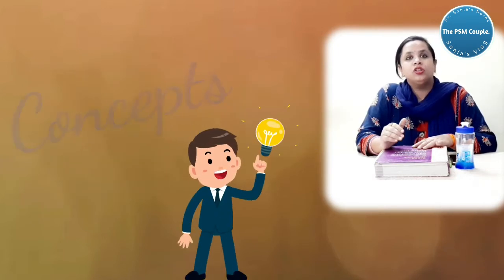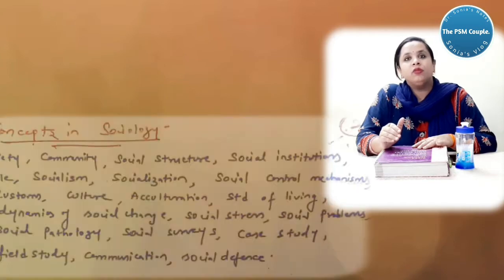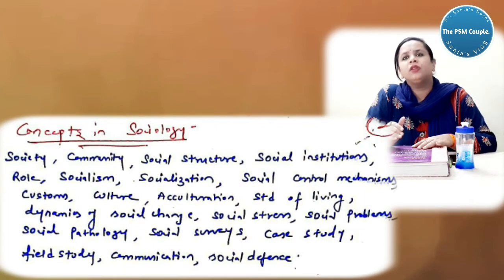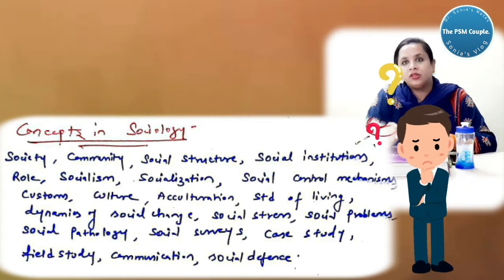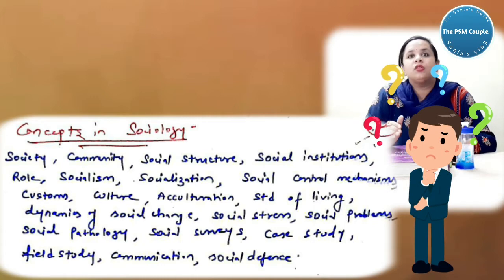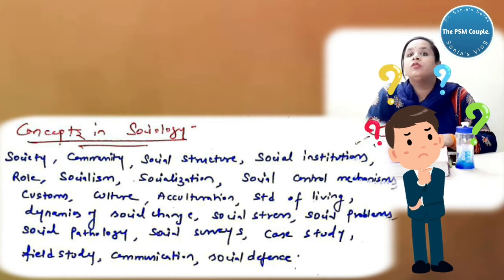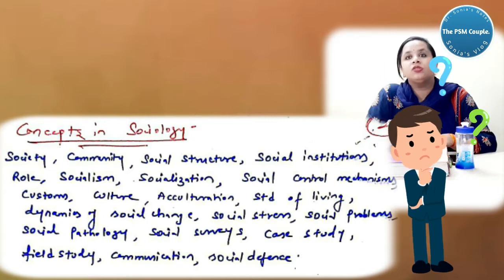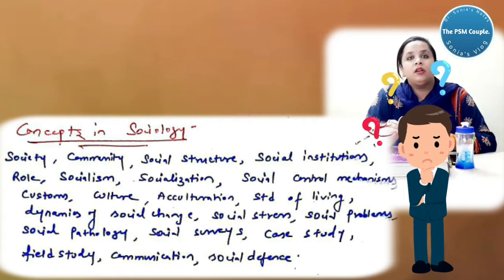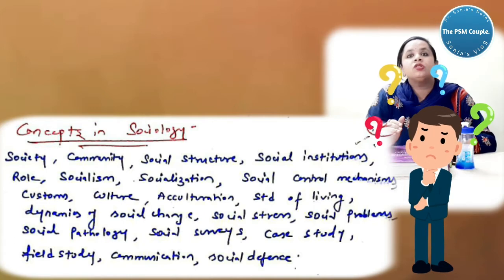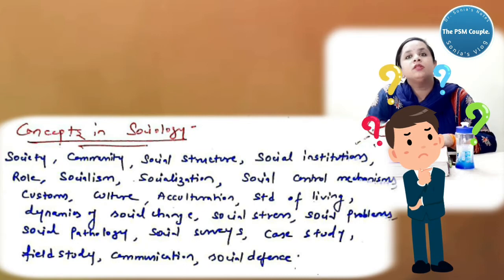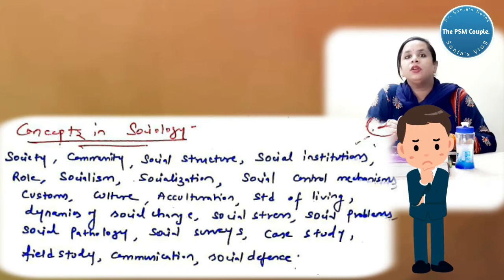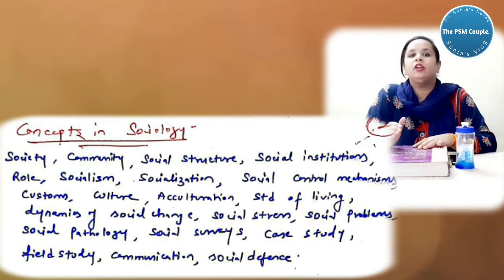Now what are the concepts, various concepts in sociology? We will study them one by one or in short we will cover the important definitions like society, community, social structure, social institutions, the role, socialization, social control mechanisms, customs, culture, acculturation, standards of living, dynamics of the social change, social stress, social problems, social pathology, social surveys, case studies, field studies, communication and social defence.